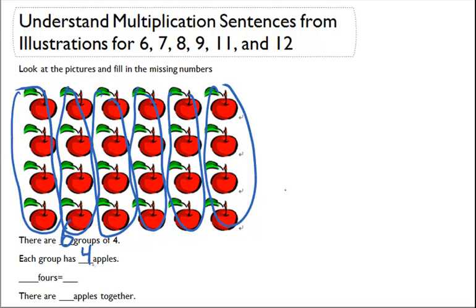And so there are how many fours? There are one, two, three, four, five, six fours. And that also equals six times four. There's six fours.